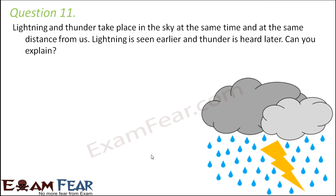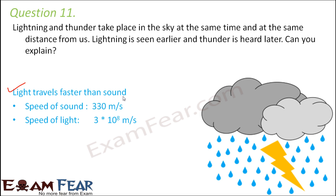Question number 11: Lightning and thunder take place in the sky at the same time and at the same distance from us. Lightning is seen earlier and thunder is heard later. When it rains heavily, you see lightning first and only after that you hear the sound of thunder. That's because both light and sound are waves. The speed of sound is around 330 metres per second through air, whereas the speed of light is around 3 × 10⁸ metres per second.